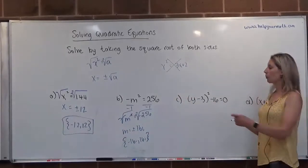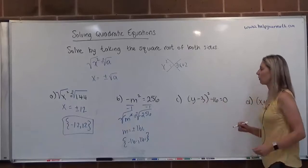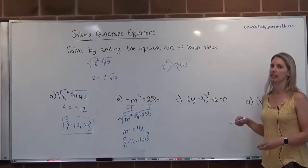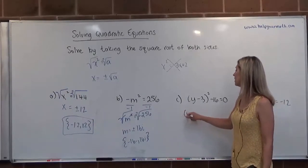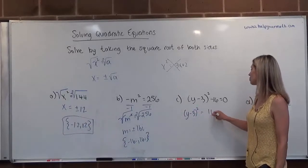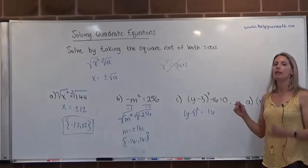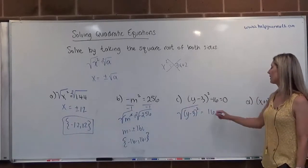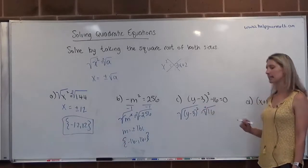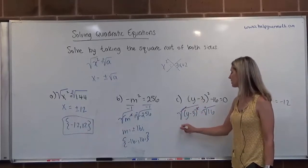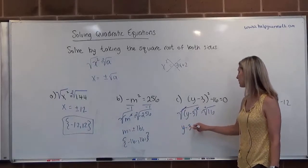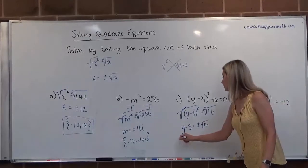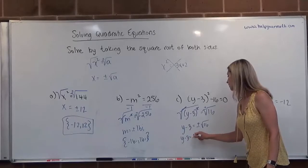For letter c, we're going to leave this in factored form — we actually want it to be factored. So we're going to leave the (y minus 3) squared as is, but we do want to move the 16, which is currently being subtracted, so we add it to both sides, giving us (y minus 3) squared equals 16. Now that the square is by itself, we take the square root of both sides and put the plus or minus sign on the constant side. The square and the square root cancel, leaving us with y minus 3 equals positive or negative 4, since the square root of 16 is 4.